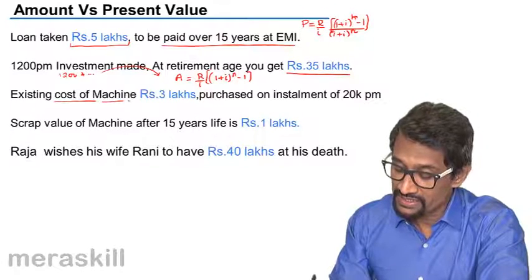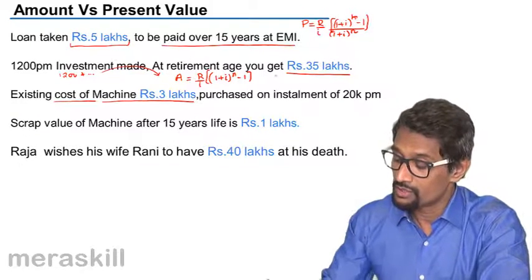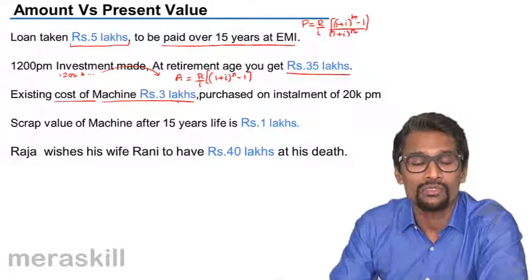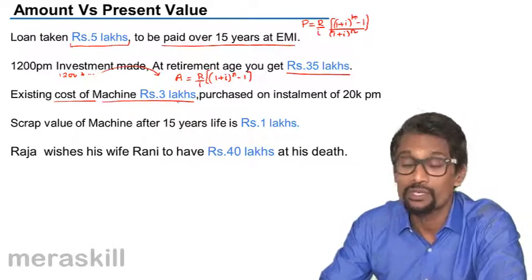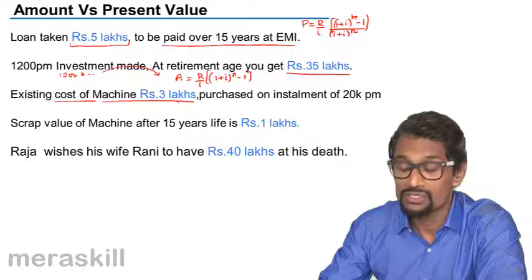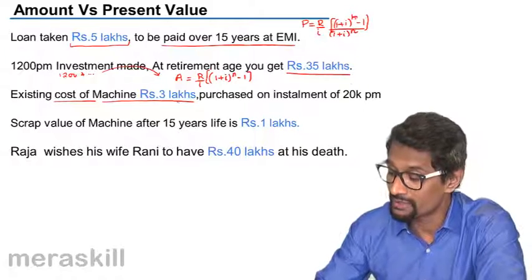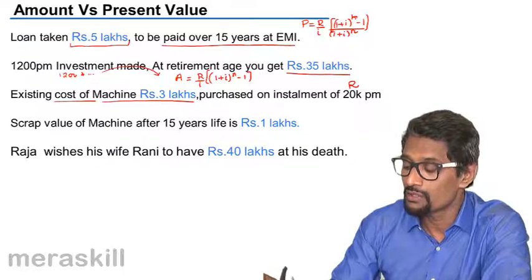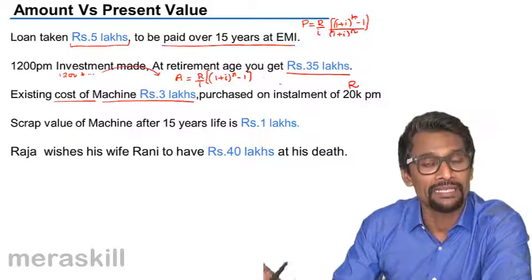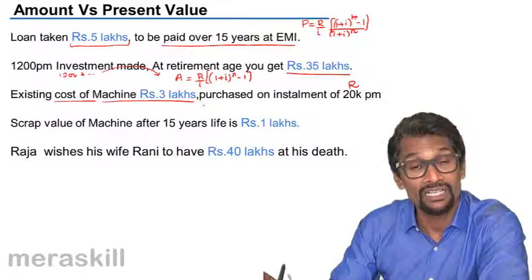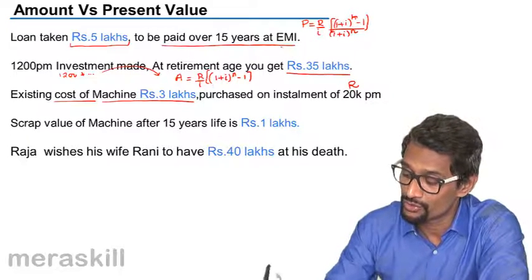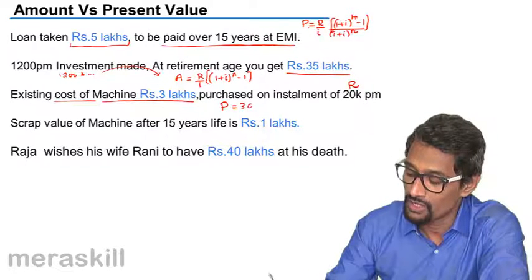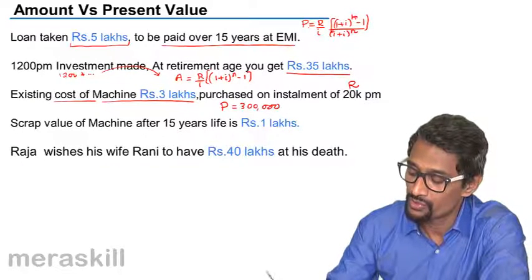The existing cost of a machine is 3 lakhs — that is what you bought. You bought a machine worth 3 lakhs now, took a loan, and you are paying it over a period at 20,000 per month. So the installment R is going to be 20k, and you need to find out how you will pay the interest. The current value is 3 lakhs, so you're going to use present value equal to 3 lakhs. Hence, this is the present value formula that you're going to use.